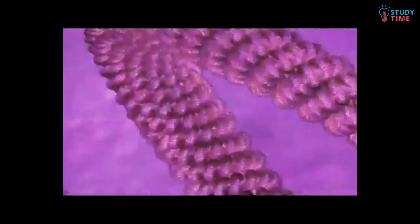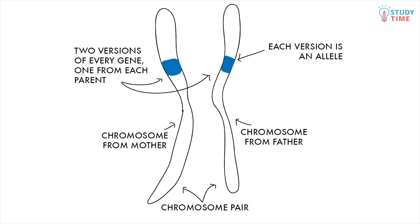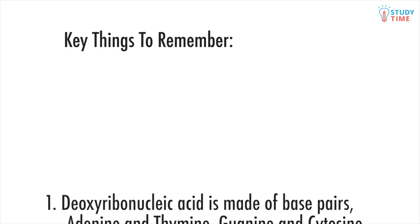Each form of the same gene is called an allele. Out of the two alleles of each gene, one is dominant and one is recessive. We'll look at how genes are inherited in depth in the next video.